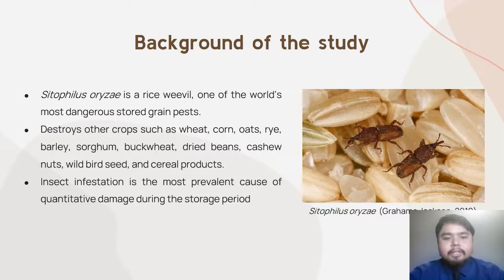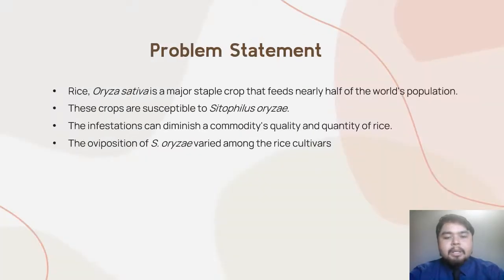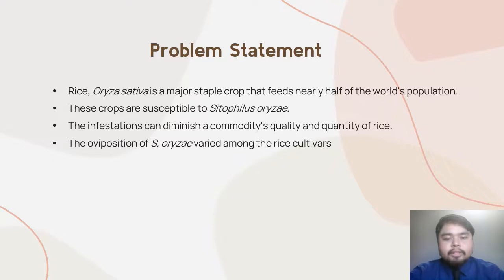Insect infestation is the most prevalent cause of quantitative damage during the storage period. For the problem statement of this study, Sitophilus oryzae infests rice, which is the major staple crop that feeds nearly half of the world's population. This crop is susceptible to Sitophilus oryzae, which can cause significant harm particularly in storage. The infestation can diminish the commodity quality and quantity of rice, and oviposition of Sitophilus oryzae varies among rice cultivars, demonstrating differential suitability among different types of rice as host substrates.